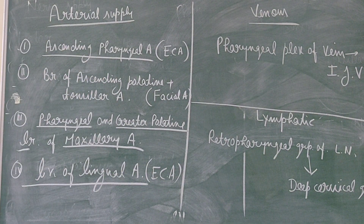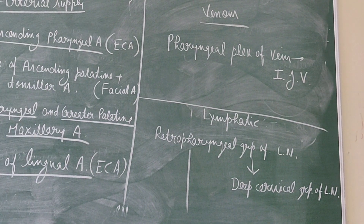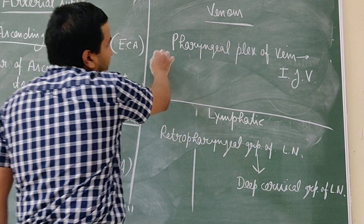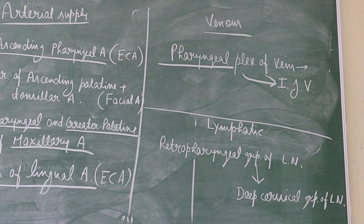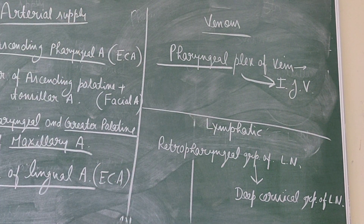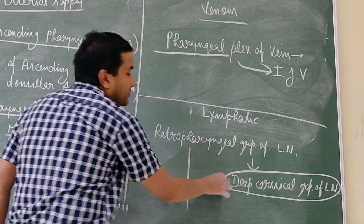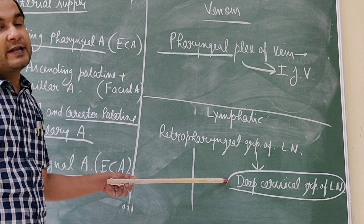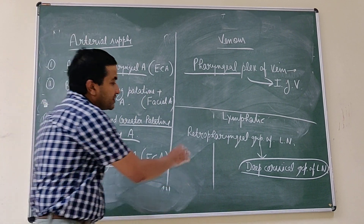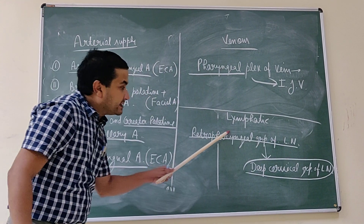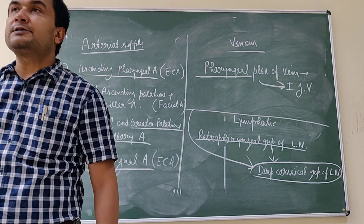For the venous drainage, the pharynx forms a pharyngeal plexus of veins, similar to the pharyngeal plexus of nerves, and these pharyngeal plexus veins are tributaries of the internal jugular vein. For the lymphatic drainage, the pharynx drains into the upper and lower deep cervical lymph nodes — the upper being the jugulo-digastric and the lower being the jugulo-omohyoid. The pharynx either drains first into the retropharyngeal group of lymph nodes and then into the deep cervical group, or directly into the deep cervical group of lymph nodes.